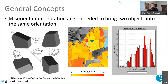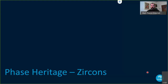Within a grain the orientation is fairly uniform, but as we go across grain boundaries we see discontinuous changes in orientation. We can also treat the whole dataset as one population and plot the distribution of misorientation angles, comparing it to the theoretical random distribution. If there were no structure to the data we'd expect the histogram to match the random line, and we can look at deviations from this and interpret them in terms of geological processes.